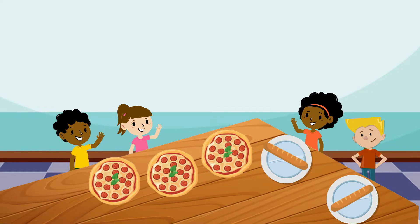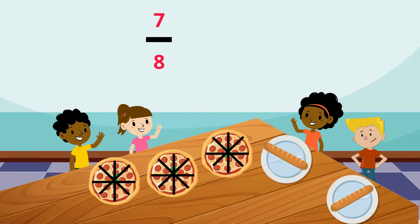Lisa was having a birthday party with all of her friends and they had 3 pizzas and 2 breadsticks to share around. Each pizza was cut into 8 slices. Lisa opened the first box and her friends ate 7 slices in 5 minutes. This means that 7 eighths of the pizza was eaten.